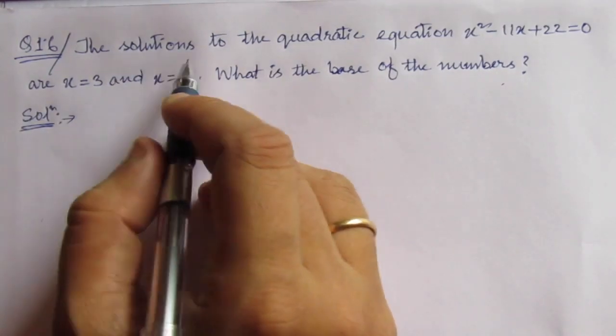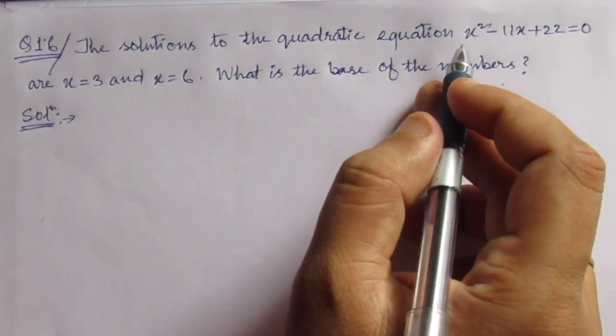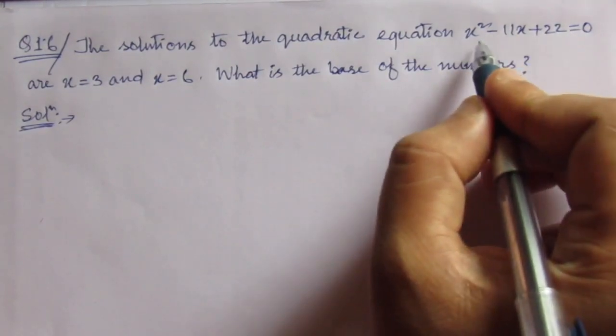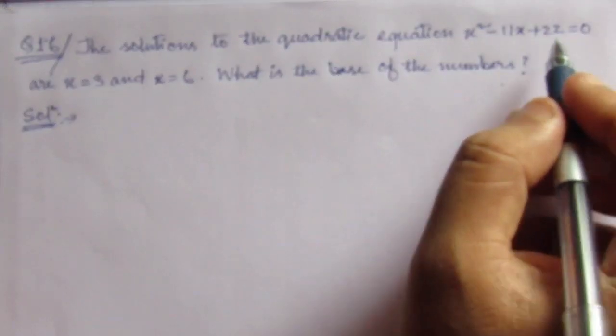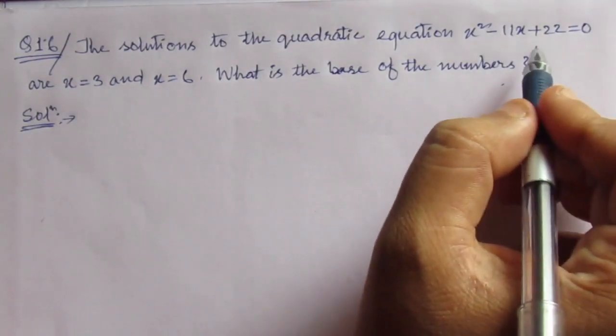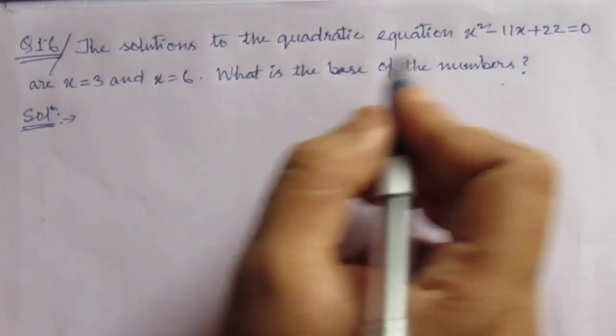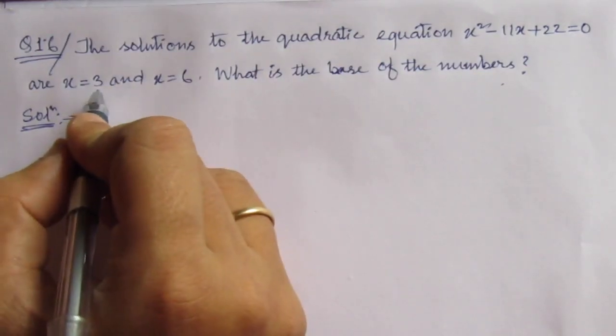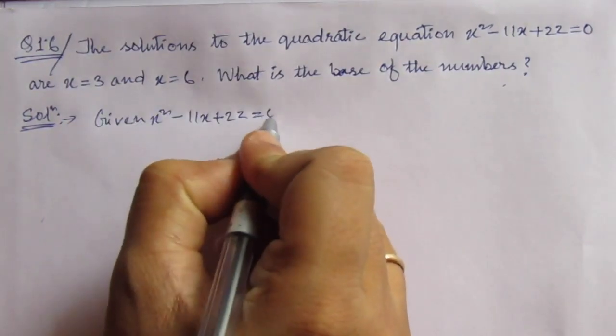The question is: the solutions of the quadratic equation x² = 11x + 22 = 0 are x equal to 3 and x equal to 6. So these are the roots of this equation. If these are the roots of this equation, then what will be the base of the numbers 3 and 6?